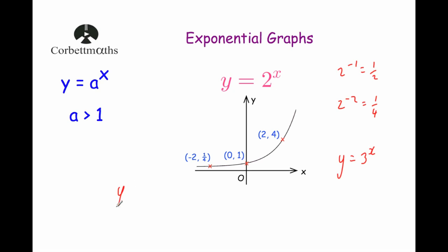What happens if we had the graph y equals 1 to the power of x? Well, 1 to the power of 0 is 1, 1 squared is 1, 1 to the power of 1 is 1, 1 cubed is 1, 1 to the negative 1 would be 1 over 1, which is 1, so this graph would be a horizontal line passing through the point 1.